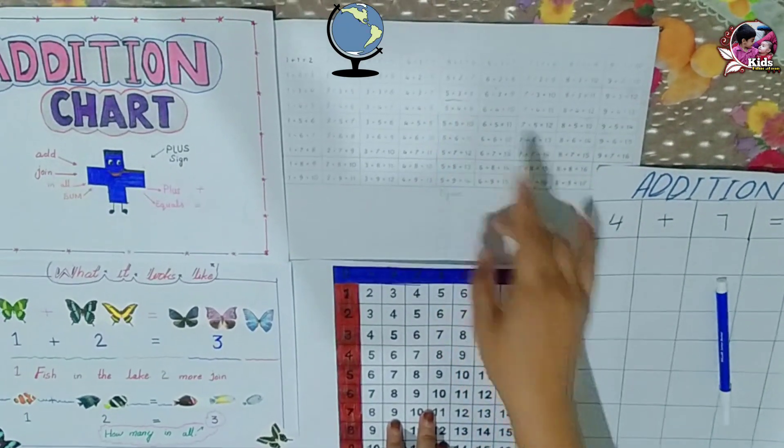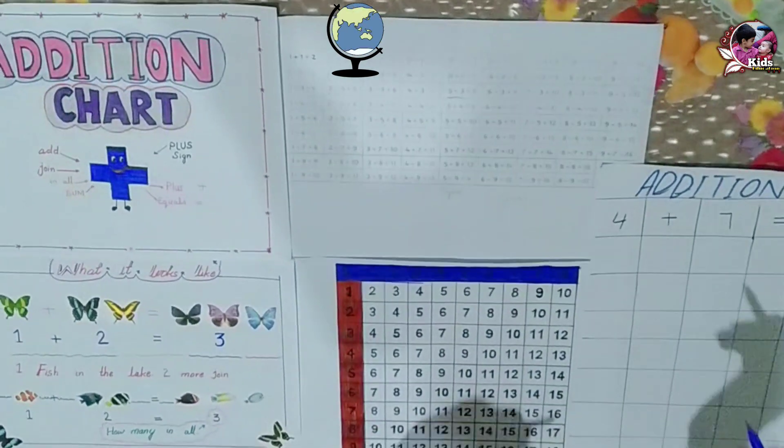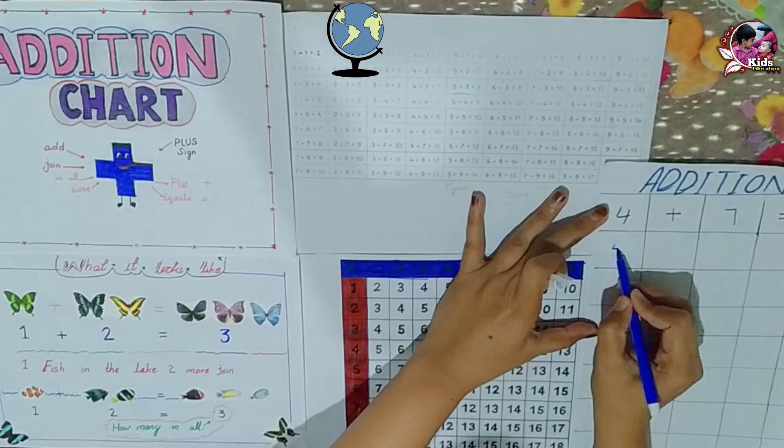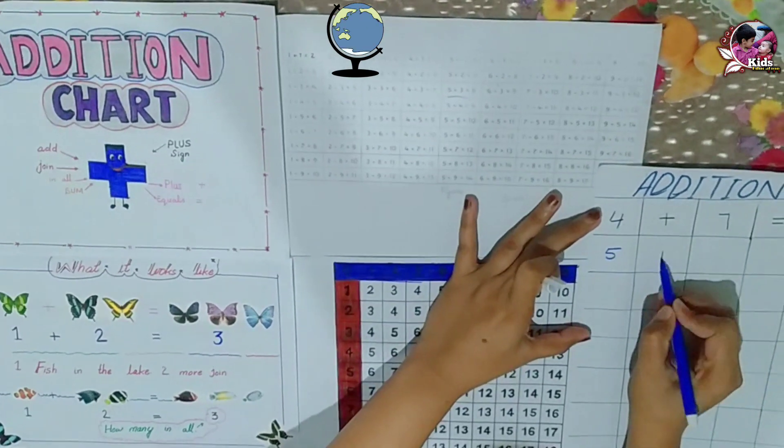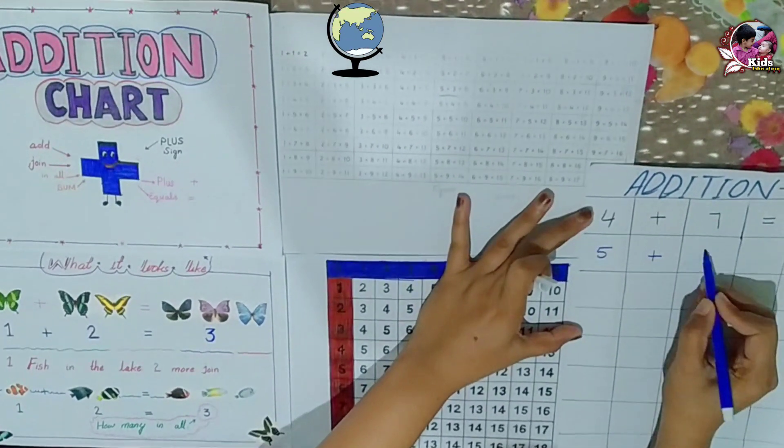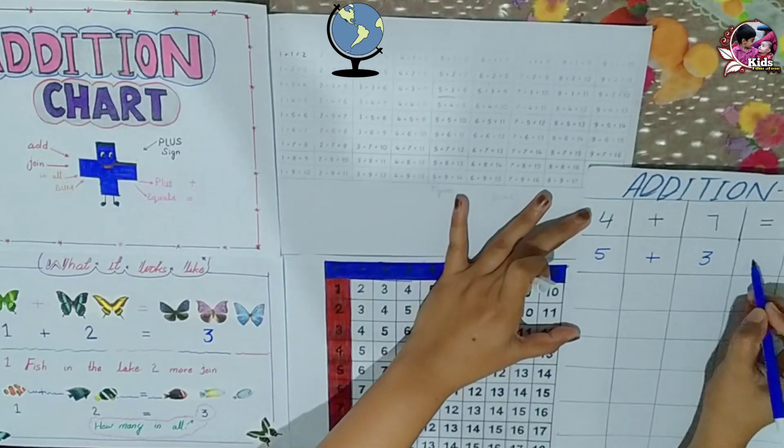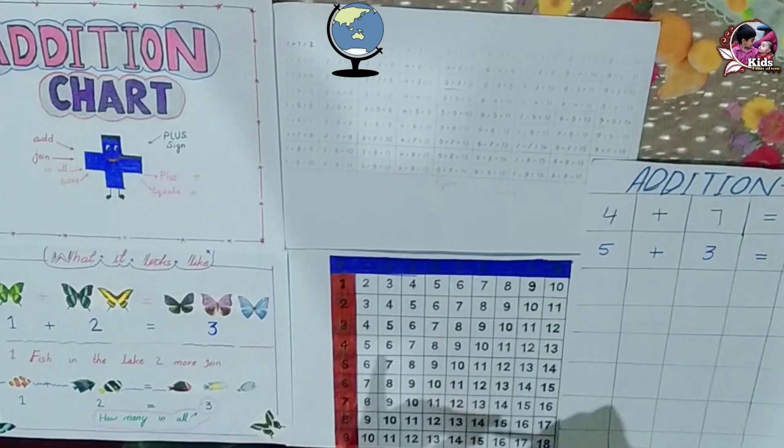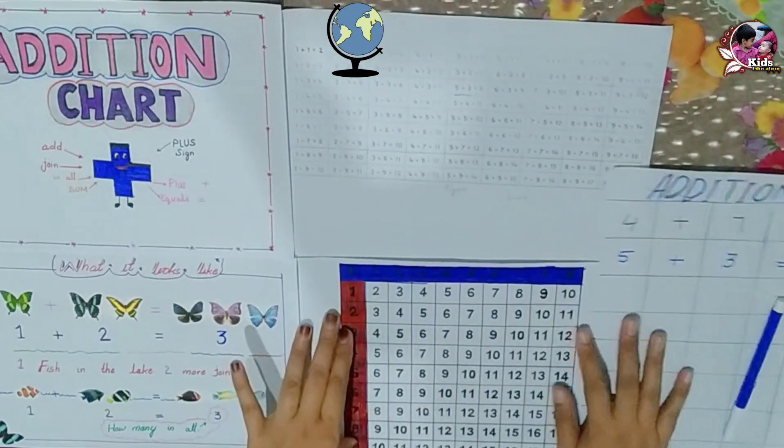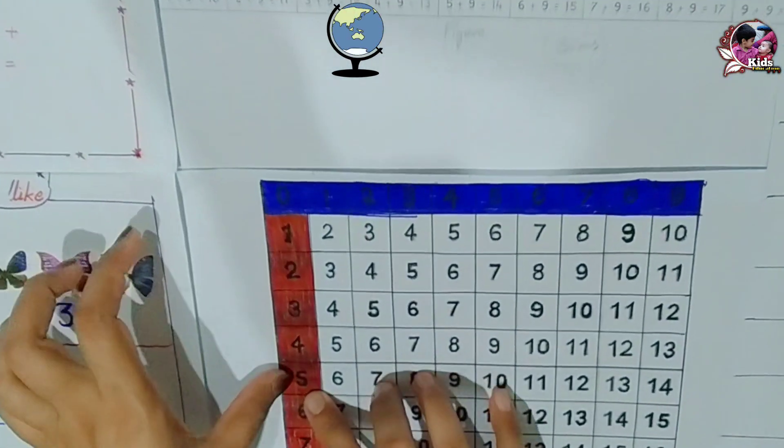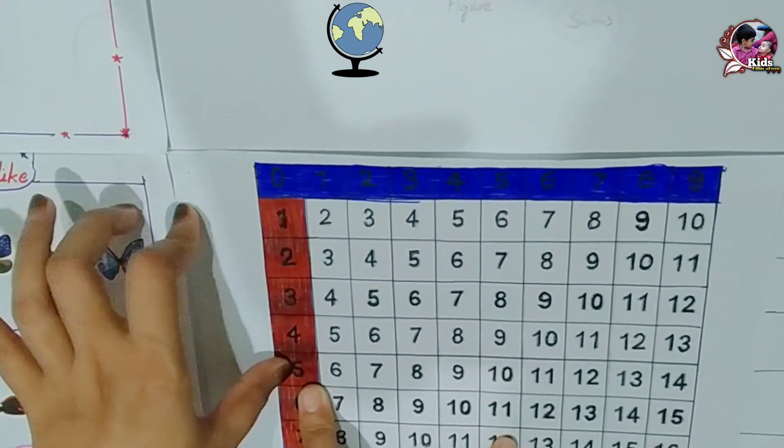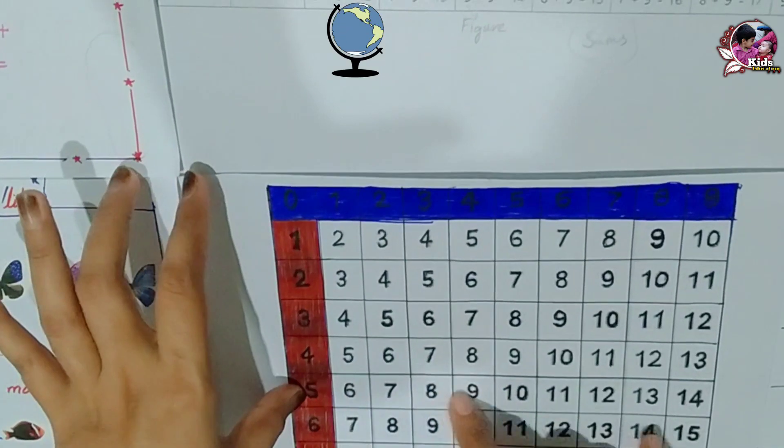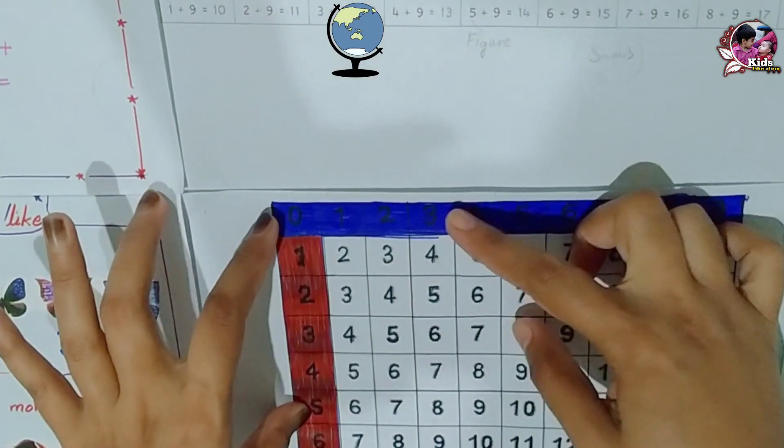Here we have 5 plus 3. Now let me do 5 plus 3. It is equal to 5 on the vertical line and then 3 on the blue line.